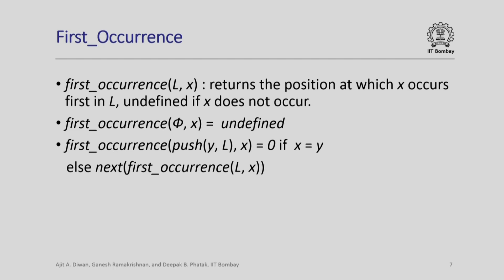Let us look at another function called first_occurrence(l, x), which returns the position at which x occurs in list l for the first time, and is undefined if x does not occur in l at all. first_occurrence(empty_list, x) is undefined since the empty list contains no element. first_occurrence of x in a list push(y, l) is 0 if x equals y — if the first element is x, the position is 0. Otherwise, we find the first occurrence of x in l and return next of that position, so the position will be one more than the position of x in list l. Thus next(first_occurrence(l, x)) returns the position at which x occurs for the first time in the larger list.